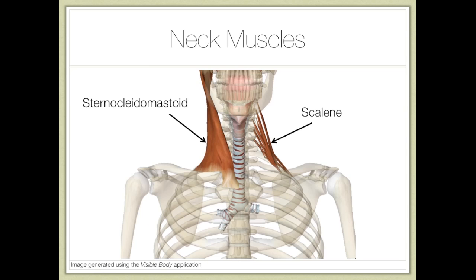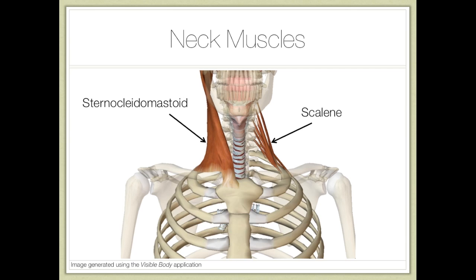On the left side we can see the sternocleidomastoid muscle, and on the right side we can see the scalene muscles. Whenever you think about the functions of muscles, it's always nice to look at structure. Both of these groups of muscles are attached to the ribs, so when they contract, they pull the rib cage up and out and expand the chest to increase lung volume.